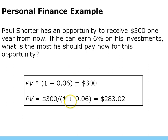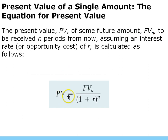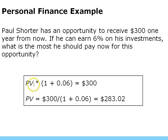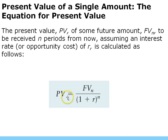The present value formula is: PV = FV ÷ (1 + R)^N. If you notice, that's the inverse of the future value formula. So they're really two sides of the same coin.